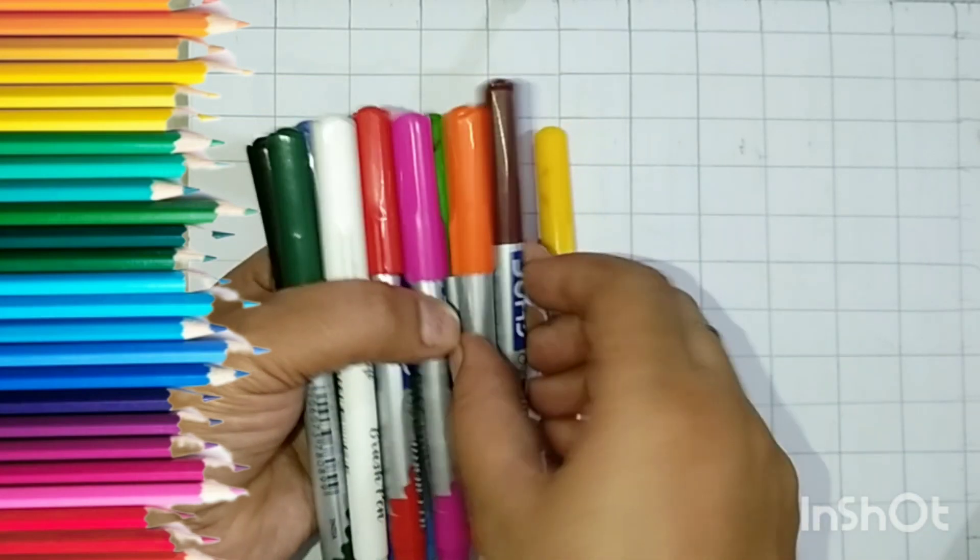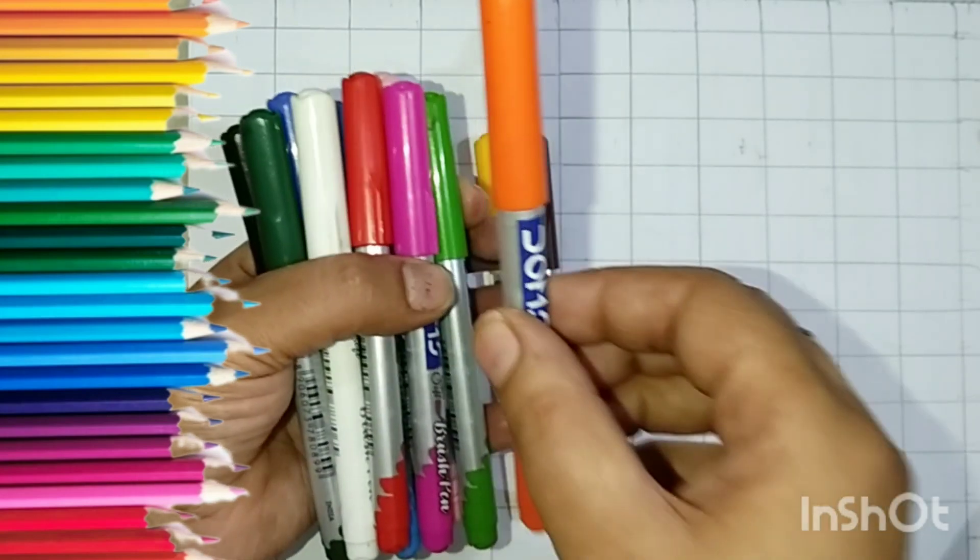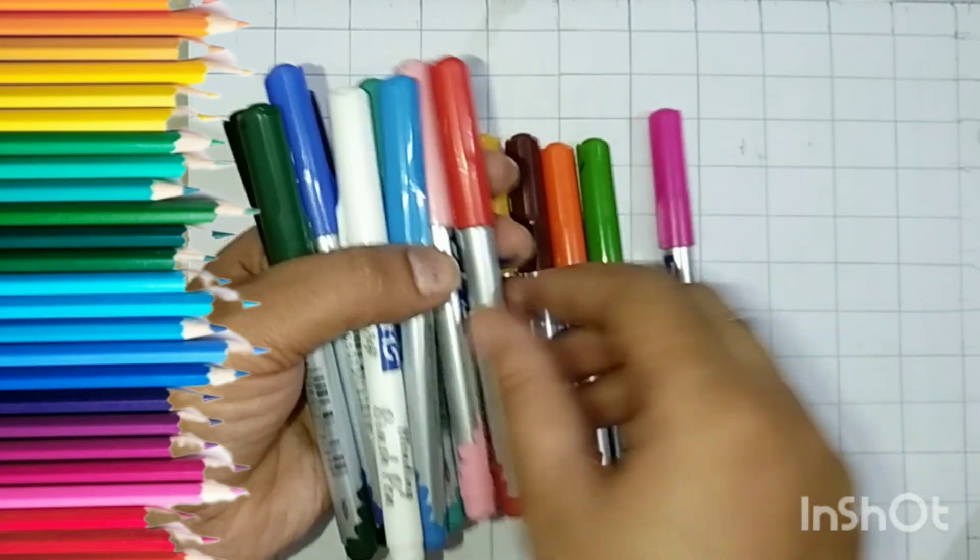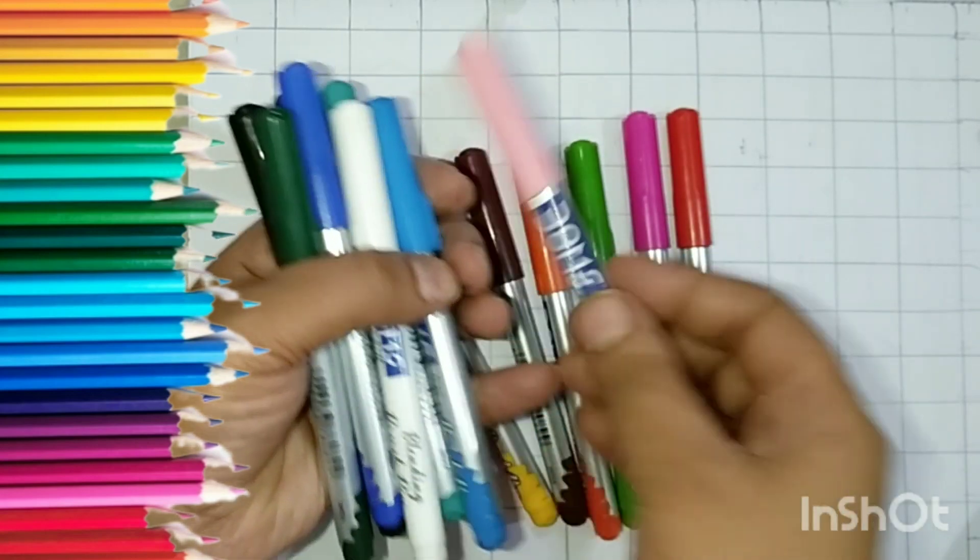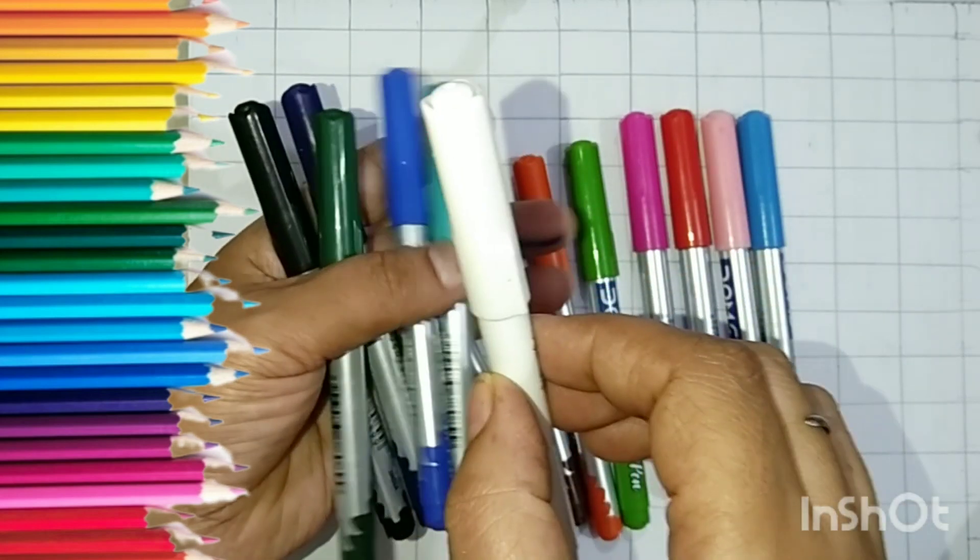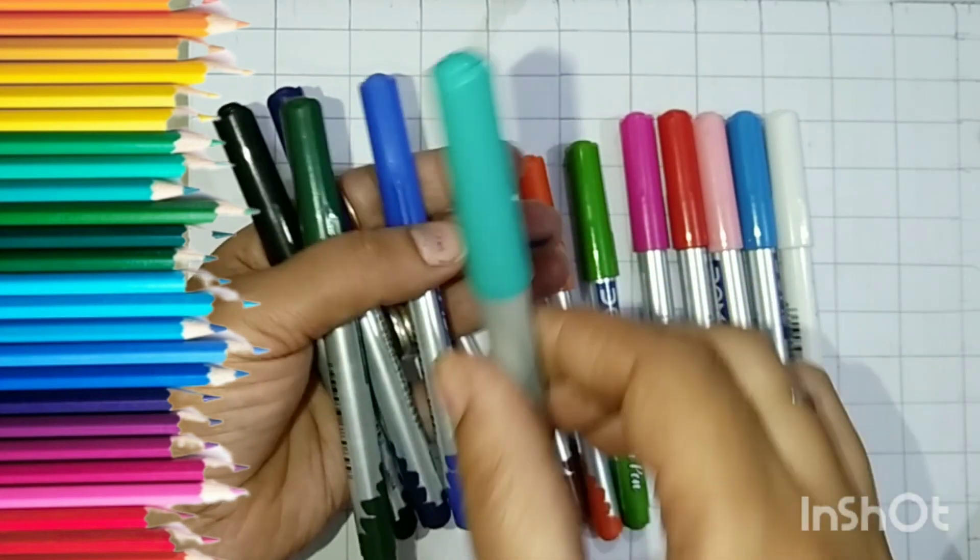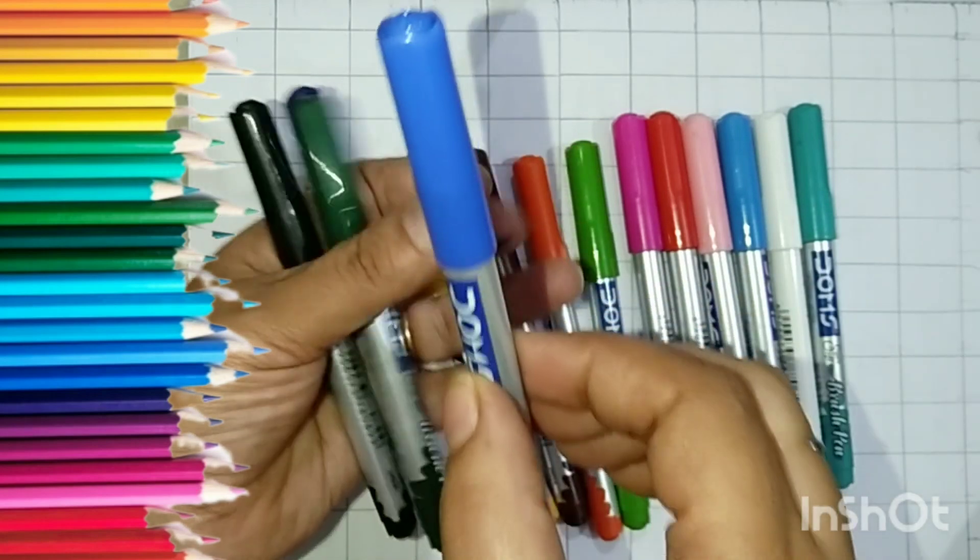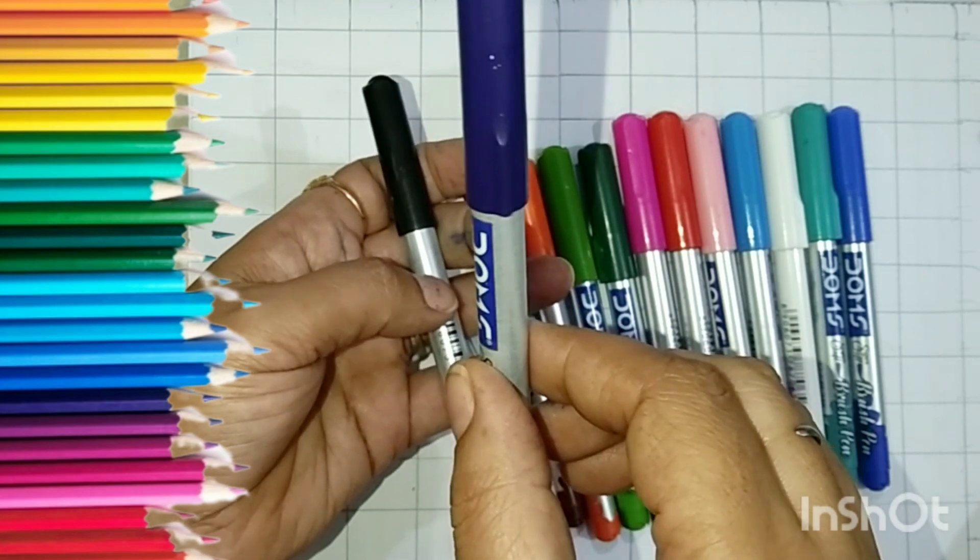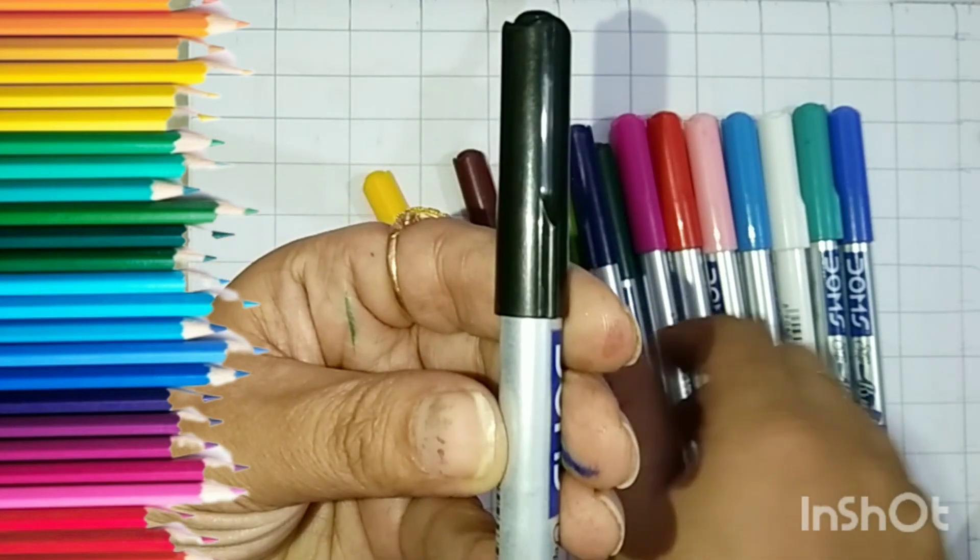Yellow, brown, orange, green, pink, red, baby pink, sky blue, white, red, sea green, blue, deep green, indigo, black.